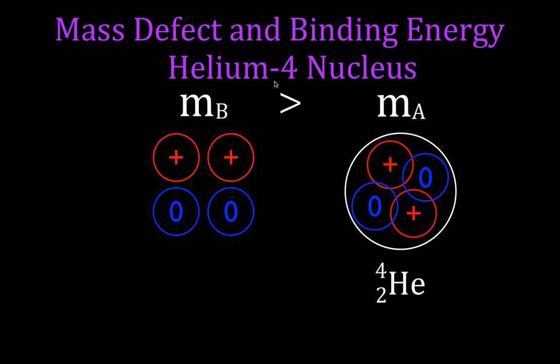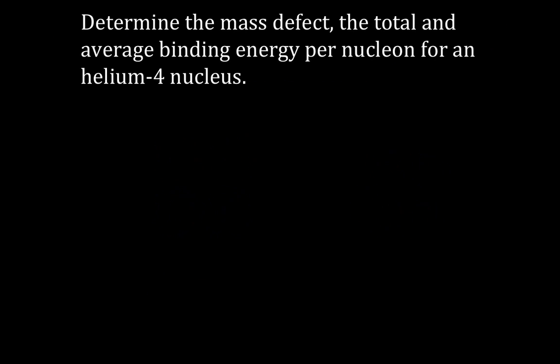That mass that's missing — the difference in mass — is the mass defect. We can then use Einstein's equation, or another conversion which we'll show you also, to determine the binding energy and the average binding energy per nucleon. So let's go ahead and do that.